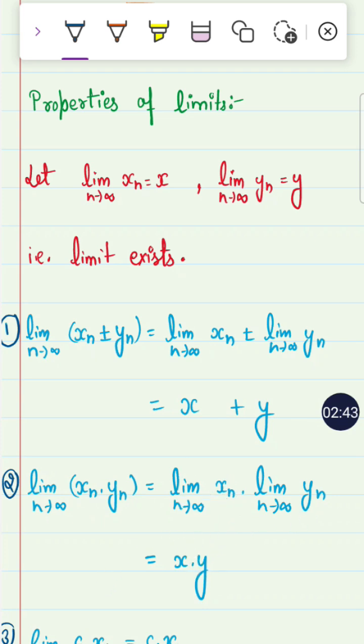If you multiply a sequence by a constant and take limit of this, then the limit goes inside and this gives you c·X. So all the sequences have limits and they proceed by plus or minus.